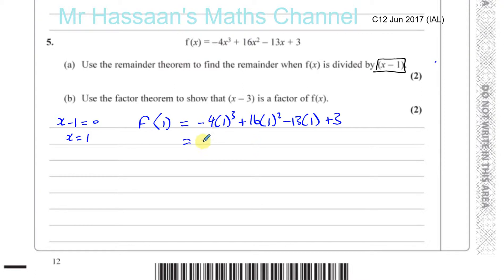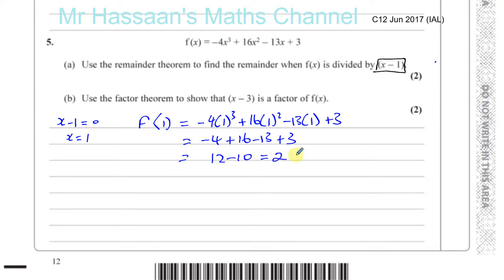Well, that gives you minus 4 plus 16 minus 13 plus 3. That's 16 minus 4, which is 12. And minus 13 plus 3, which is minus 10. So that gives you 2. Therefore, the remainder is 2. That's part A.